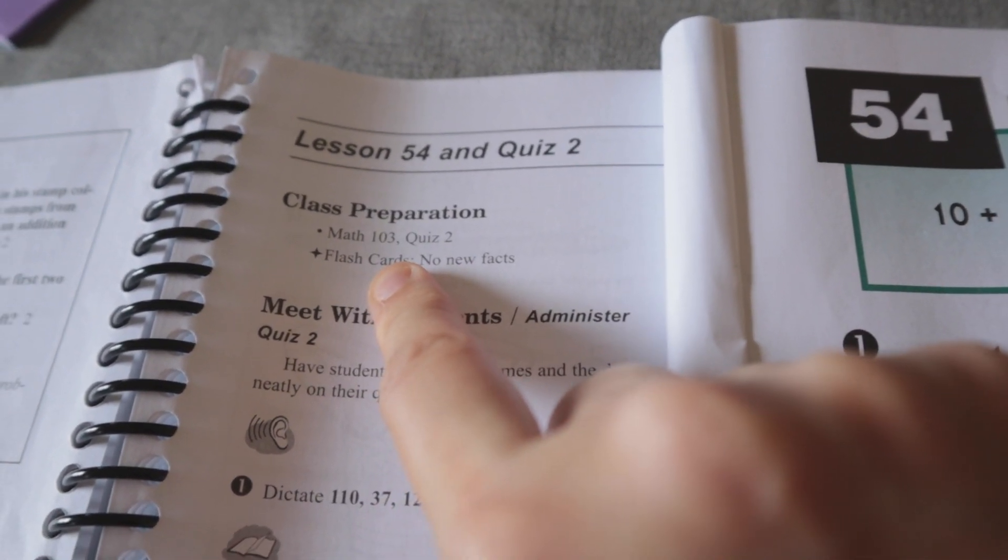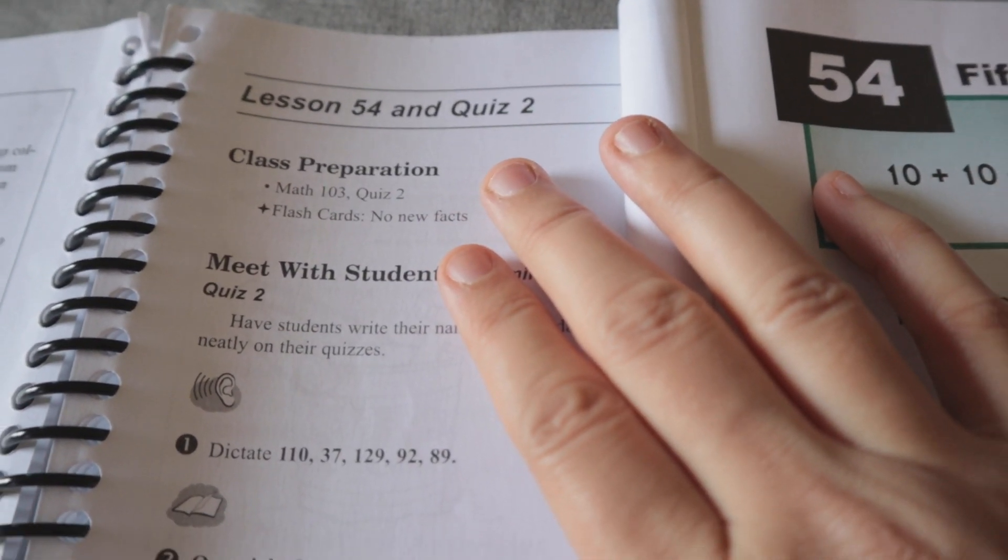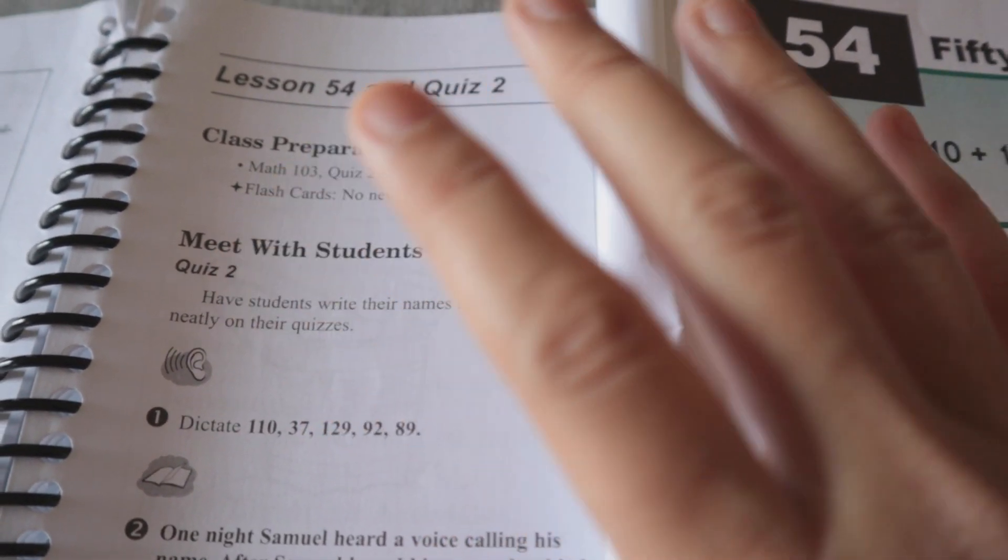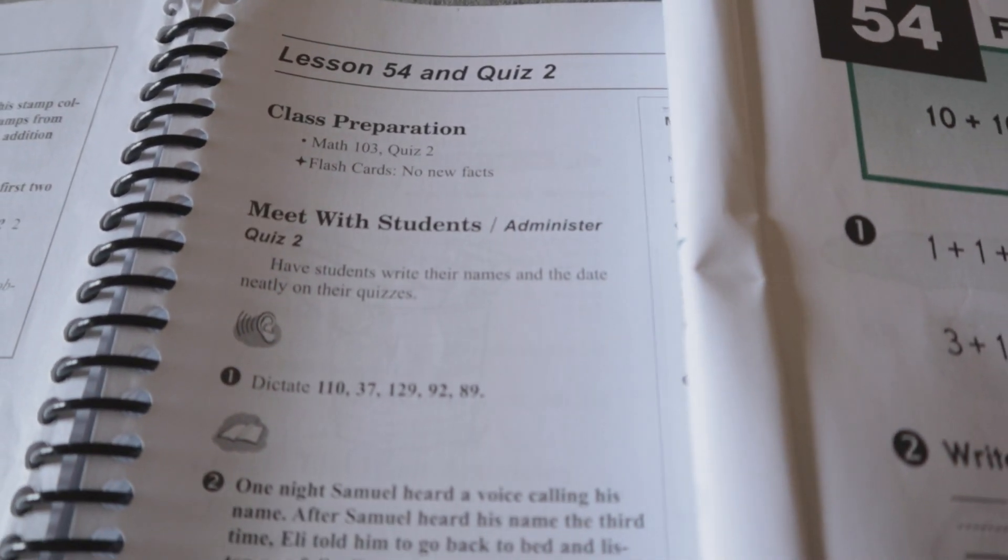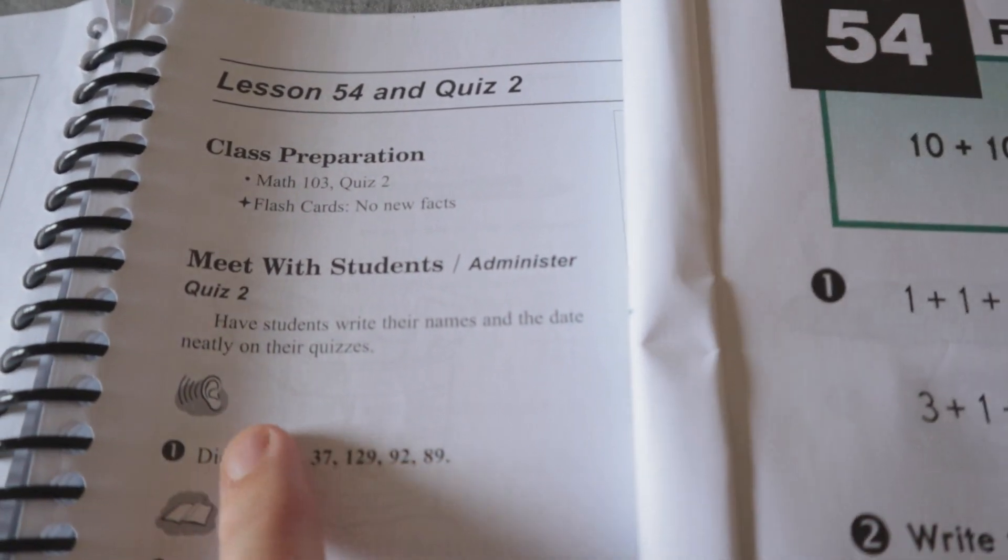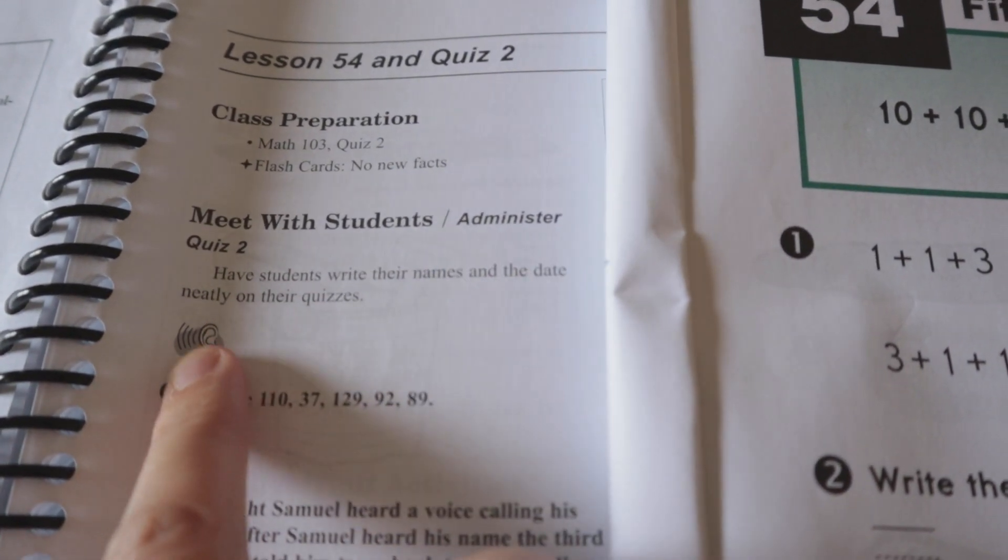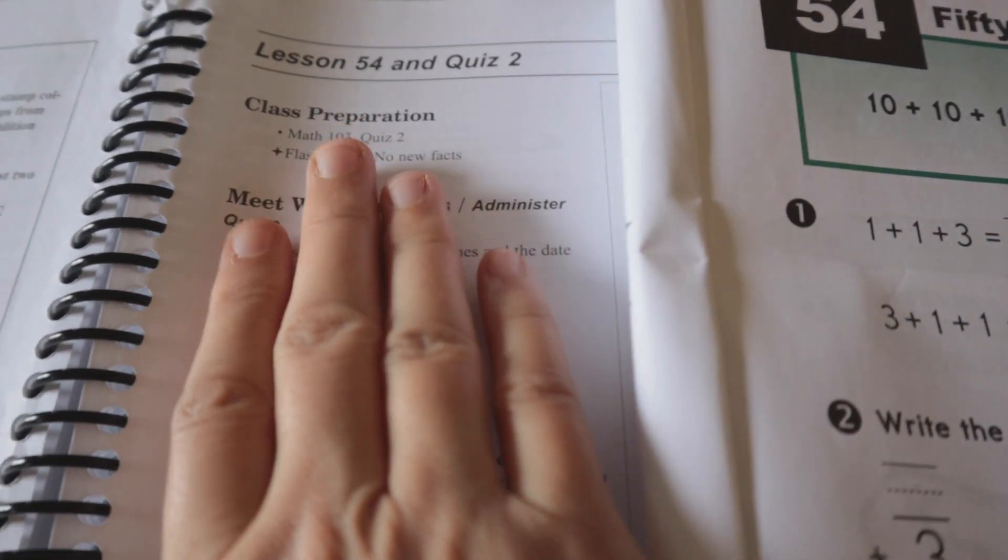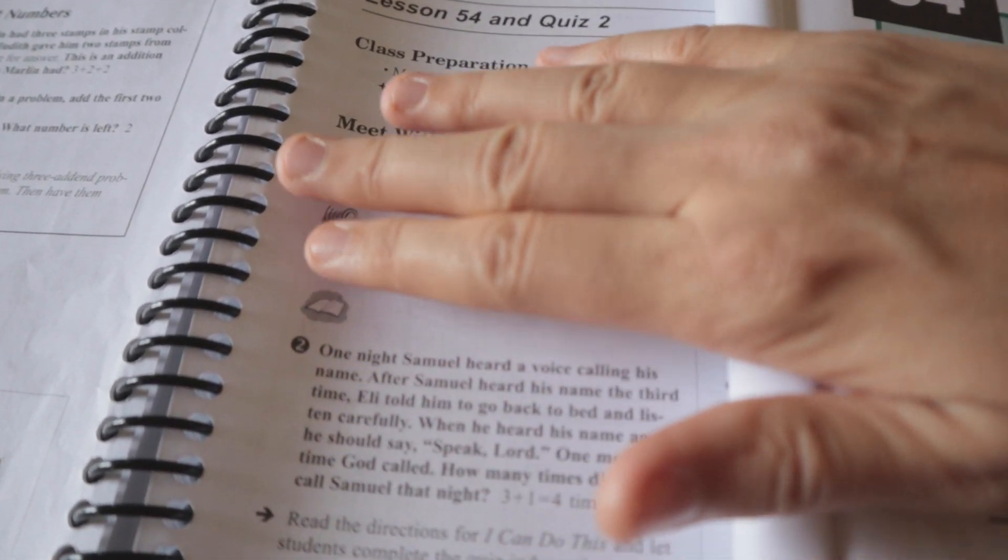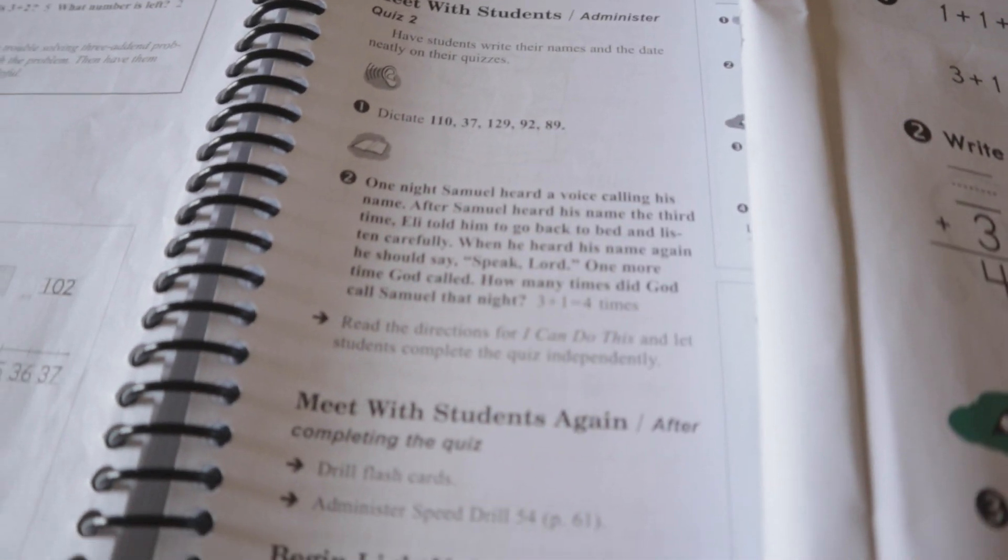Now we actually don't do the flashcards. I haven't found them necessary for my kiddos. They do really well at just memorizing the facts by doing the speed drills each day but some people I know would rather do the flashcards rather than the speed drills. So you can just kind of do whichever way fits your kiddo or family best. So then it has that they actually do quiz two first. There are some things like right here where you have to say the different things out loud and then they complete it on their test.